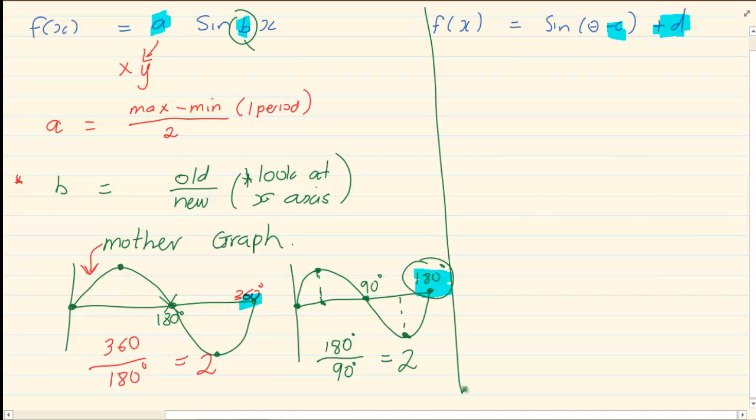Let's take now the adjustment with C and D. When we are working with C, C means that the graph has shifted right or left. We are working specifically with the x value. Okay? So when we are looking at the x axis, we need to know what are the starting points. Now we know the starting points of the following graphs, right? Again, remember I am referring to the mother graph.